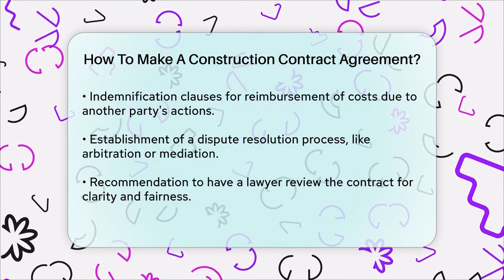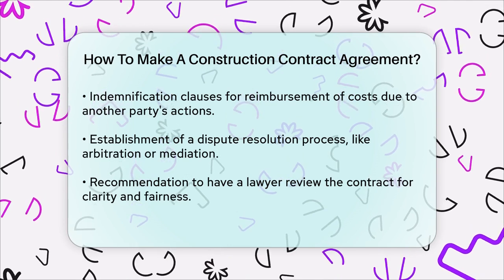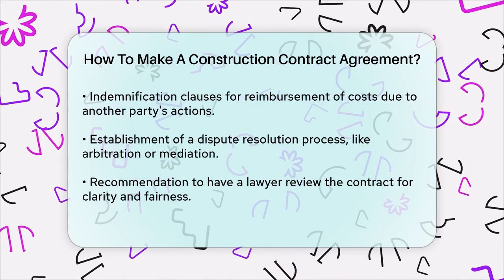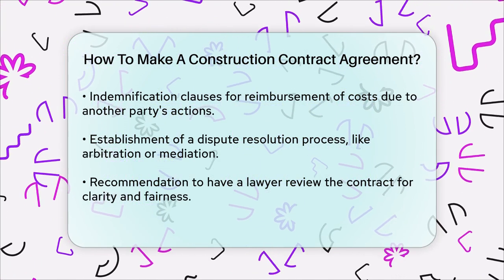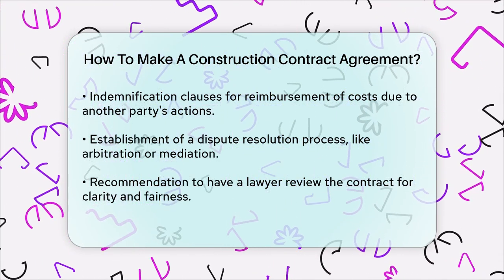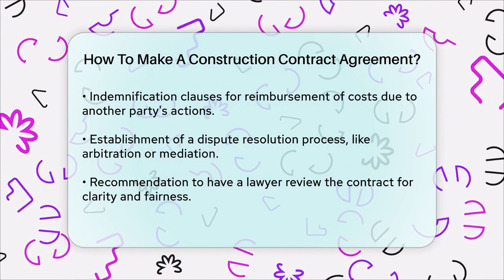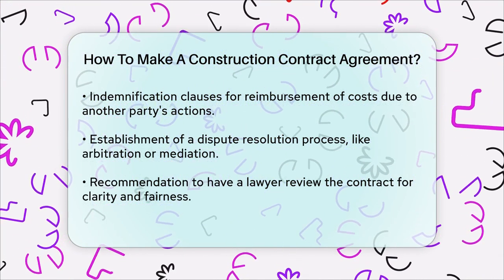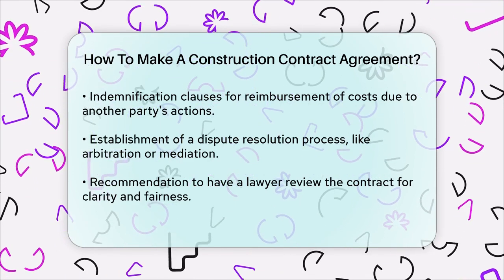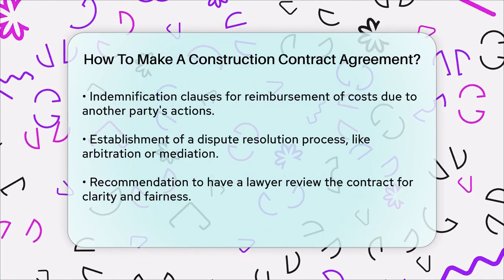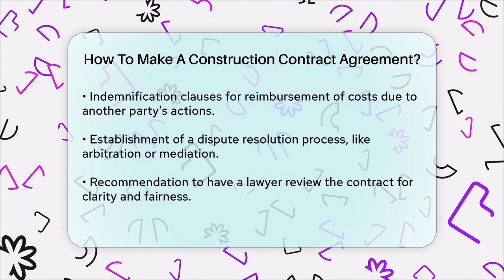In summary, creating a construction contract agreement involves detailing the scope of work, project cost and payment terms, schedule of work, authority, materials, timeframes, penalties, change orders, payment provisions, indemnification, and dispute resolution. By including these elements, you can ensure that your construction project is well planned and protected from potential issues. Always have a lawyer review your contract to make sure it's clear, fair, and protects your interests.